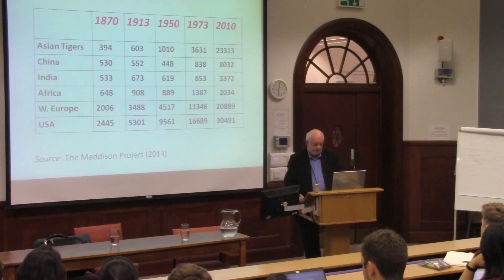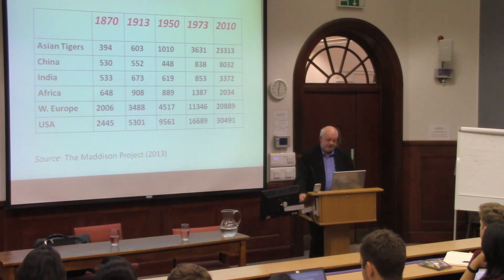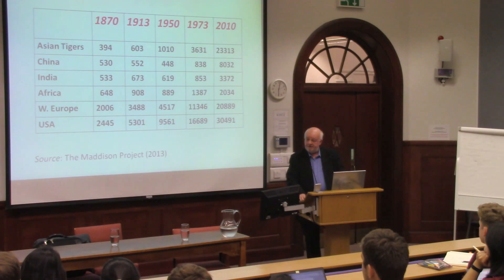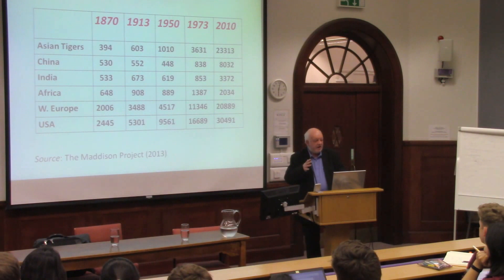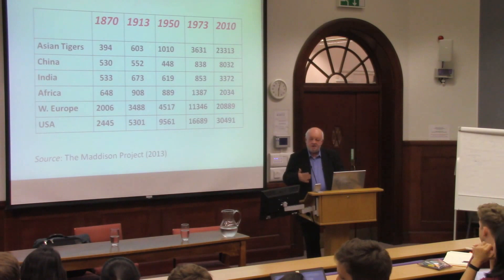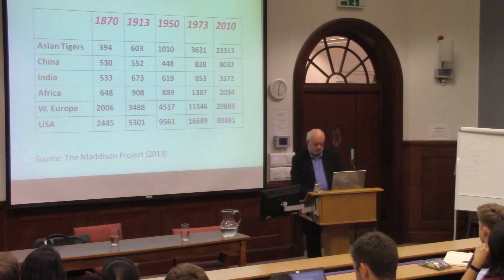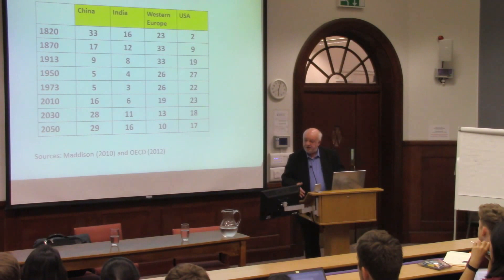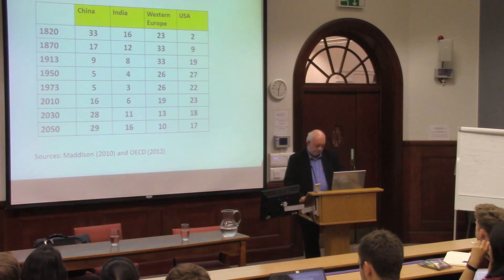Those are some numbers from the Maddison project — purchasing power parity adjusted, done in 1990 Geary-Khamis dollars. Look at China and India, at least through 1973, and compare them with Western Europe. China and India do start to catch up; Africa gets left behind. The gaps in 2010 are much bigger than they were in 1870. So this is a world which is a combination of divergence and delayed catching up — certainly not a smooth beta-sigma convergence of the kind a neoclassical model would predict. China has a third of world GDP in 1820, dropping to 5% in 1973, and it's started to catch up and may get back to its early 19th century share — possibly in your lifetime.